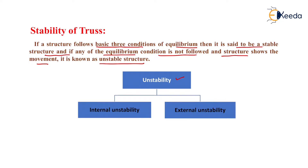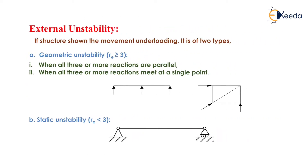In the case of a truss, instability is bifurcated into two parts: internal instability and external instability. External instability is the same as for beams and frames — it is bifurcated into two parts. First is geometric instability when reactions are greater than or equal to three. Second is static instability when reactions are less than three. When all three reactions are parallel, or when three or more reactions meet at a single point, the structure is subjected to geometrical instability.